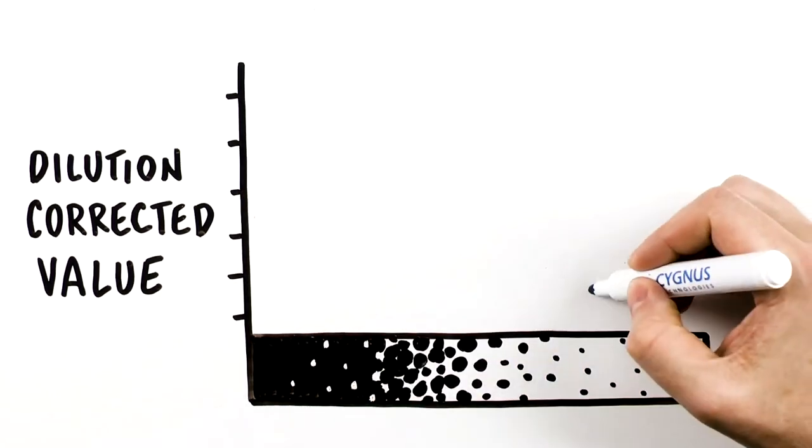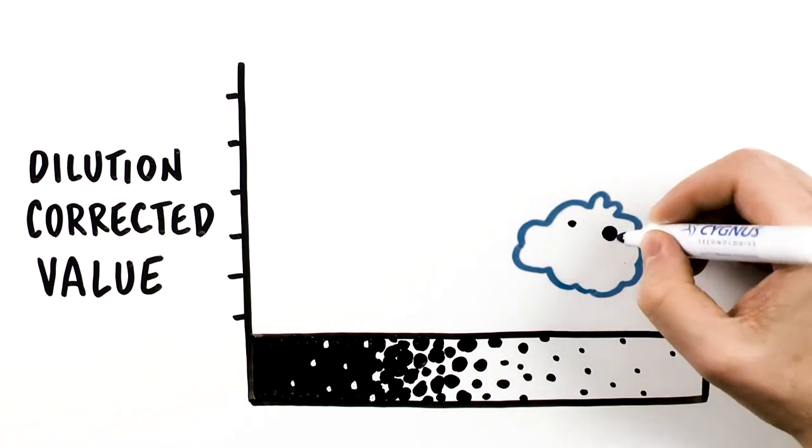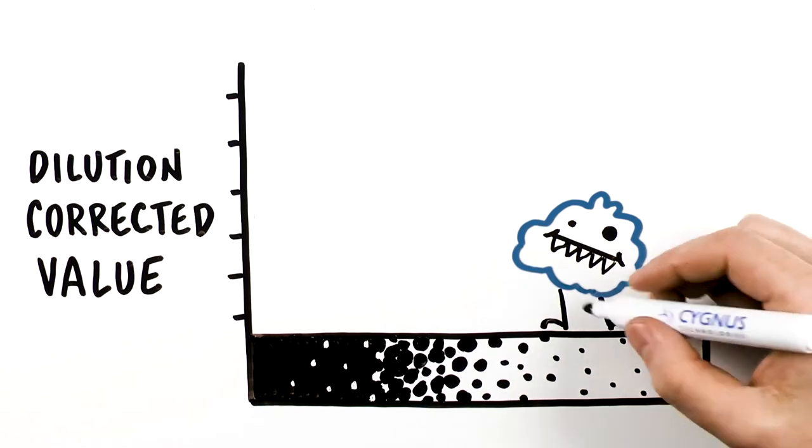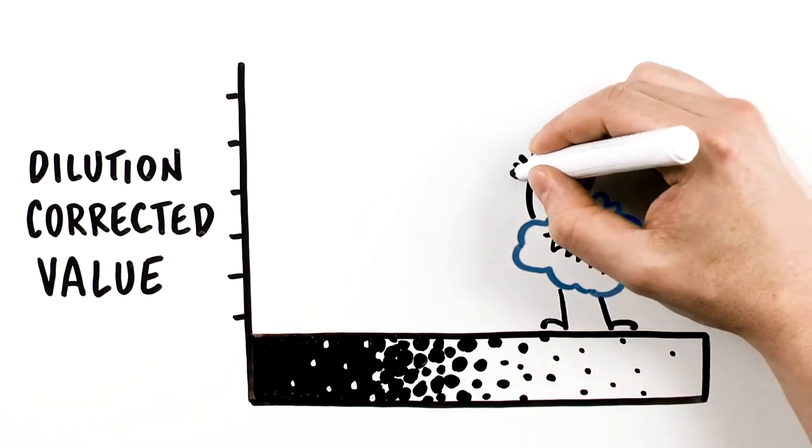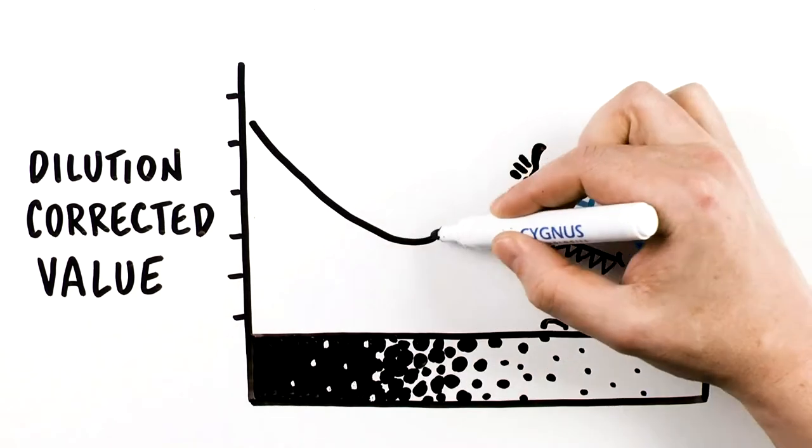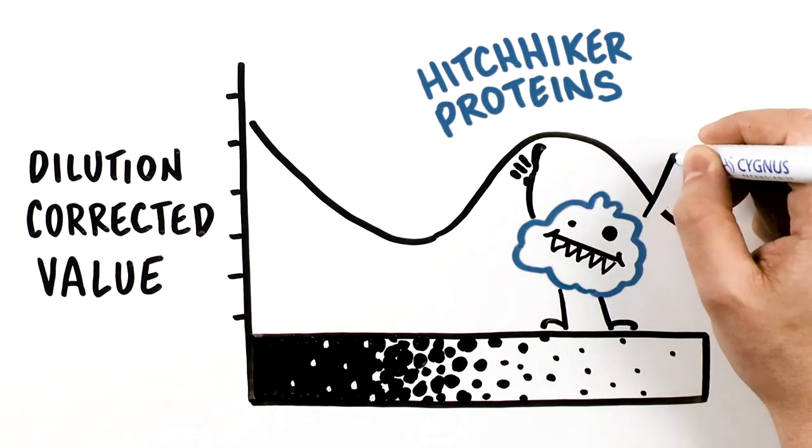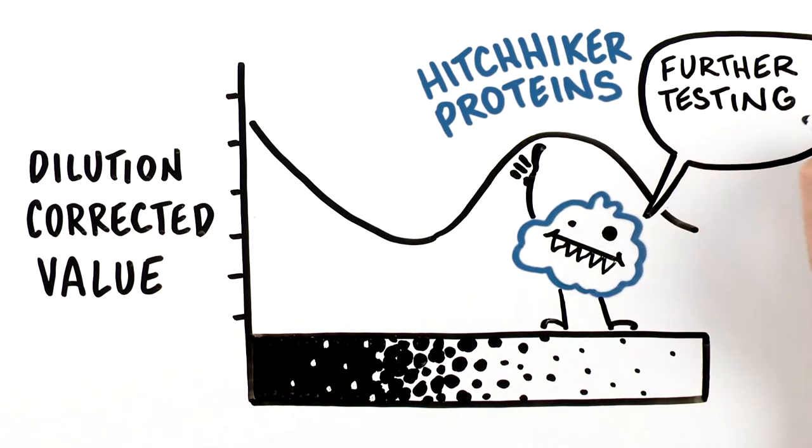However, in some cases, a lack of dilution linearity can occur due to a subset of HCPs that have some affinity for the drug substance or purification columns and have been enriched during the purification process of a drug substance. These HCPs are known as hitchhiker proteins and require further testing downstream to properly detect.